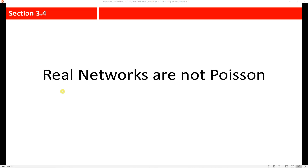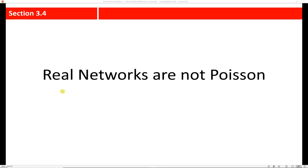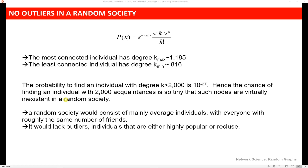So one of the things that I wanted to point out was this idea that real networks are not Poisson. So what does this mean? What this means for us is that the distribution that a random graph or a random society would follow would have mainly average individuals. So mainly people who have the average degree in the network, and everybody has about the same number of friends.